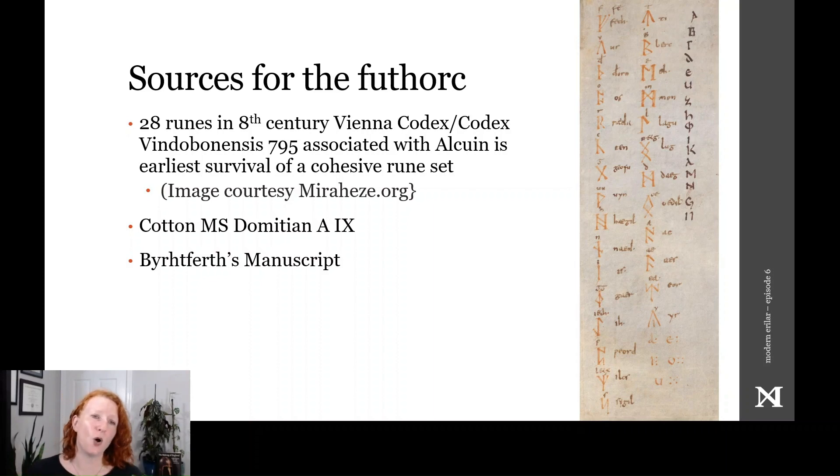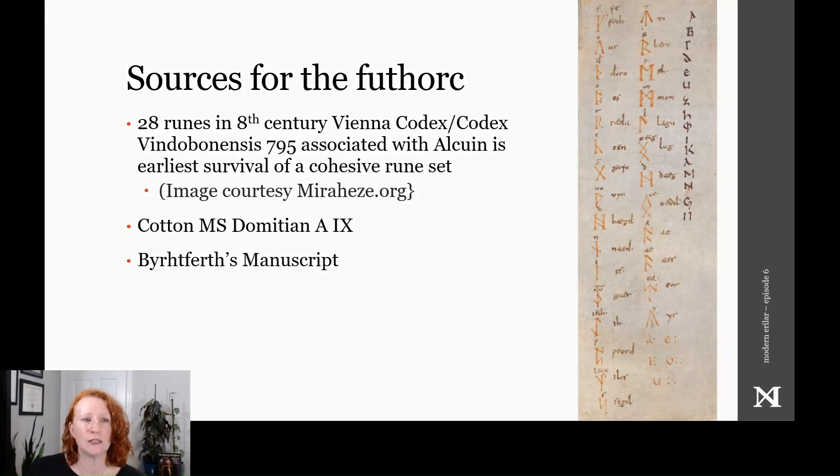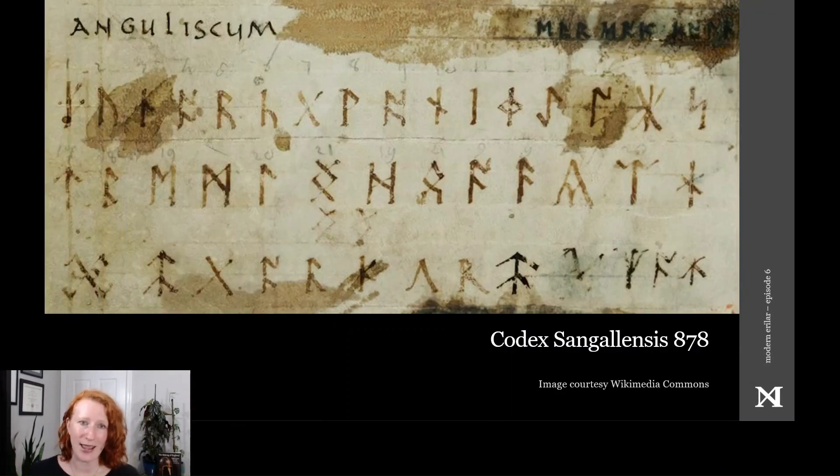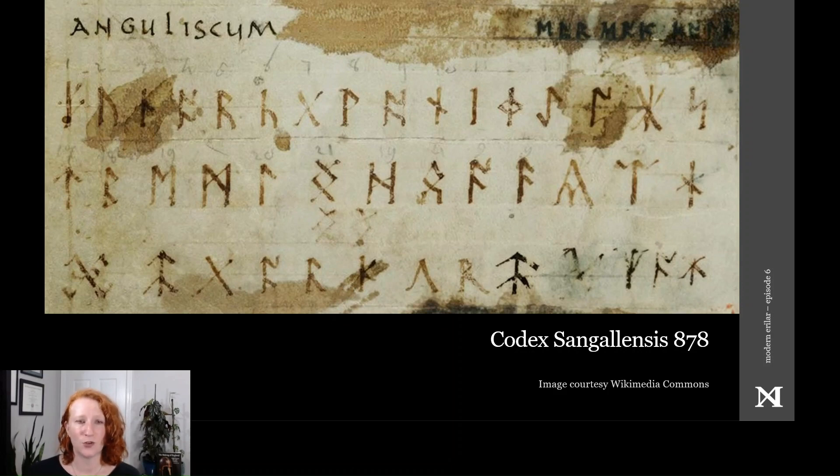Lists of runes also survive in other manuscripts, including the Cotton manuscript Domitian A9, Byrhtferth's manuscript of the 12th century, and the Codex Sangallensis 878, a 9th century manuscript currently in the Swiss Abbey of St. Gall, which may have originated in the Abbey of Fulda. It includes this table of Anglo-Saxon runes, a younger Futhark, and a copy of the Abecedarium Nordmanicum. I referred to this manuscript earlier in episode 4 as a source for recreating the Elder Futhark.